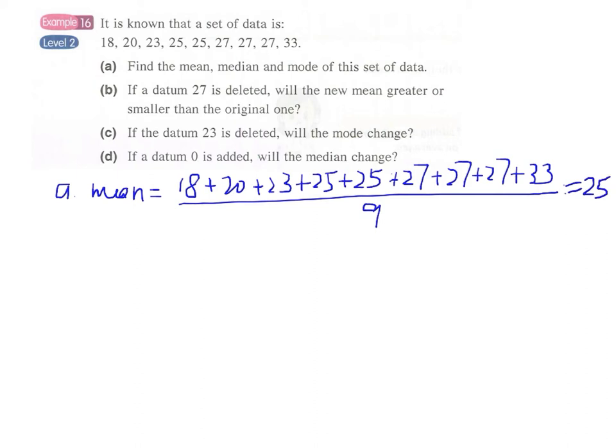That's the mean. And for the median, we have to find the number at the middle, so this will be the fifth one. Therefore, the median is 25. Mode: the number with the highest frequency, which is 27.